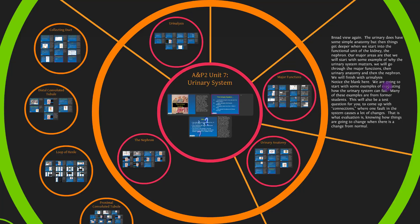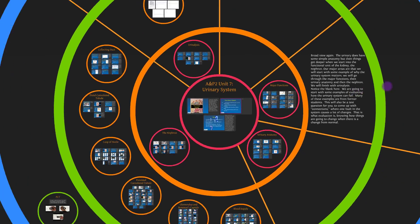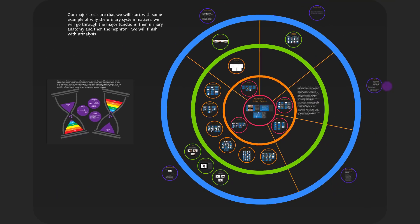Next up is the urinary system. The urinary system is the toughest system in AMP-2. Our major areas are: why does the urinary system matter, the major functions, urinary anatomy, the nephron — which is the functional unit of the kidney — and then we'll finish up on urinalysis.